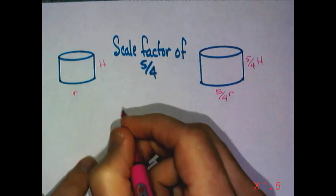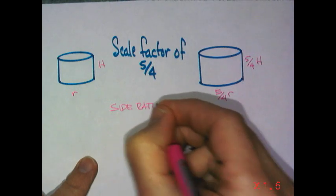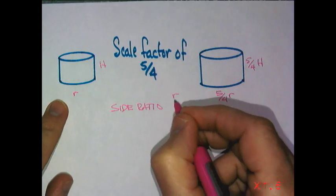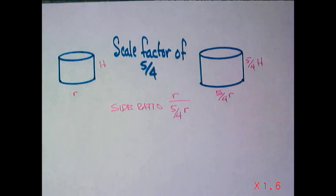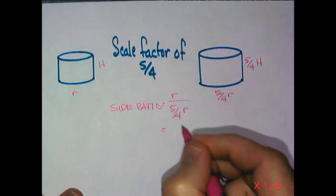So what's the side ratio? So we can choose to, let's do r to 5 fourths r. And of course, you will not leave it like that. That's just awful. Fraction inside a fraction. Things also can be simplified.